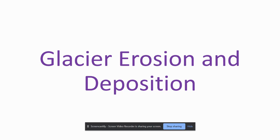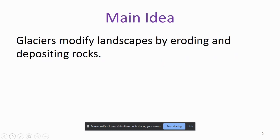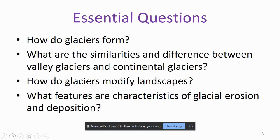Hello, I am Mrs. Arnold and in this video we will talk about glacier erosion and deposition. The main idea is that glaciers modify landscapes by eroding and depositing rocks. These are the questions you should be able to answer at the end: how do glaciers form, what are the similarities and differences between valley glaciers and continental glaciers, how do glaciers modify landscapes, and what features are characteristic of glacial erosion and deposition?